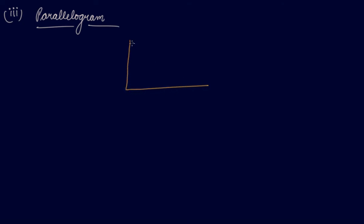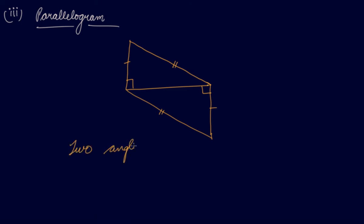Now, parallelogram. We draw one angle of 90 degrees and place one set square, then place another set square alongside it. This gives us a parallelogram. Two angles are 90 degrees, and opposite sides are parallel to each other.